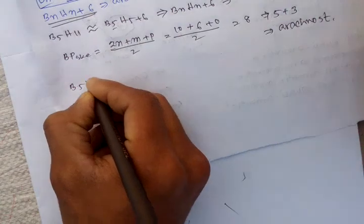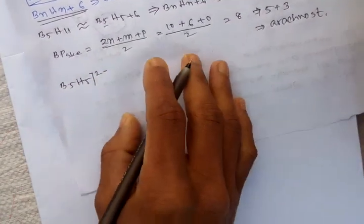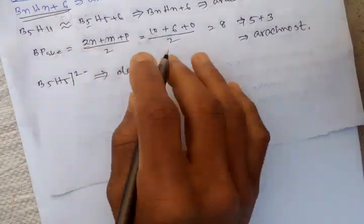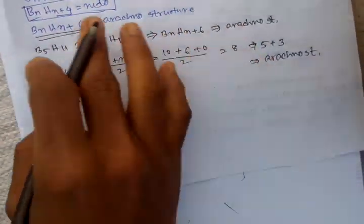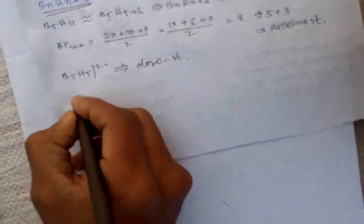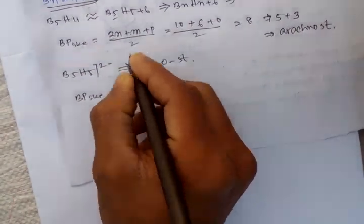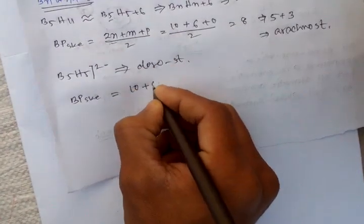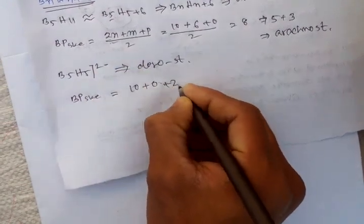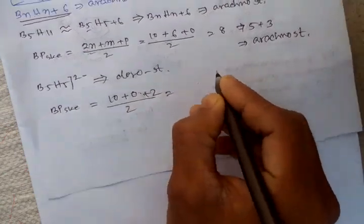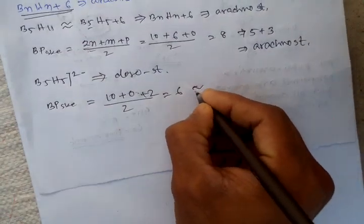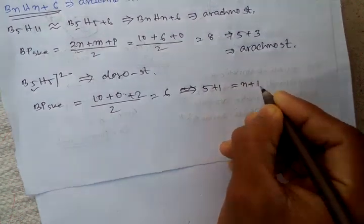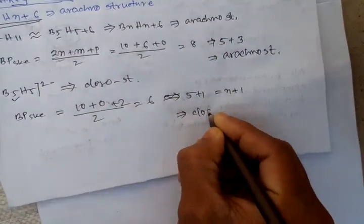Another example: B5H5²⁻. This is a closo structure because it follows the BₙHₙ²⁻ formula. Using the skeletal bond pair: (2×5 + 0 + 2)/2 = 12/2 = 6, and n=5, so 5+1=6, which equals n+1 — confirming it is a closo structure.